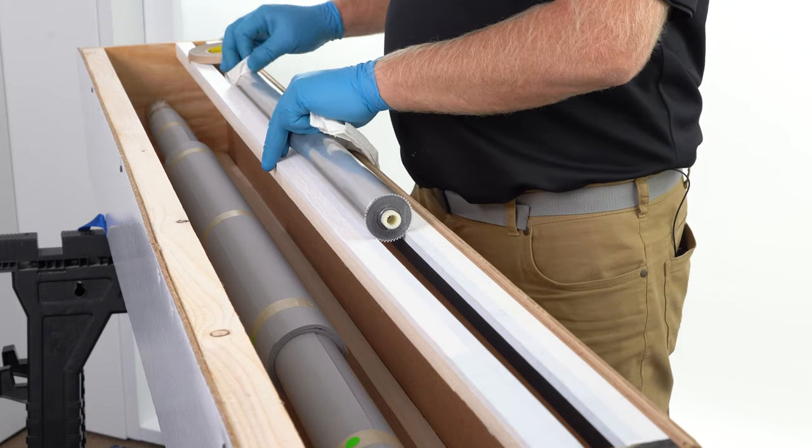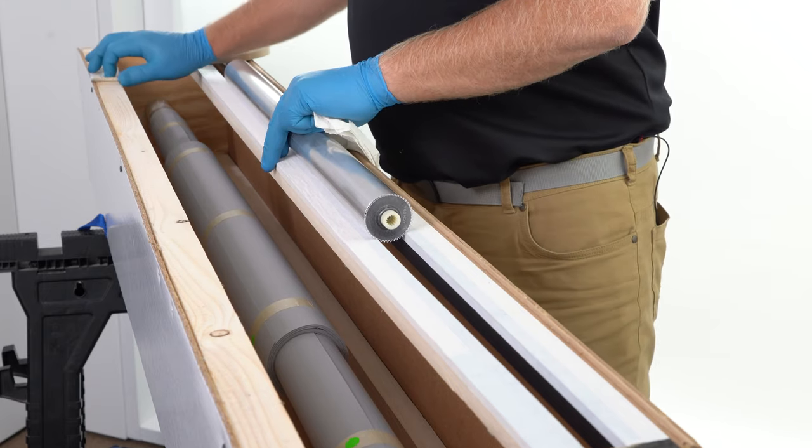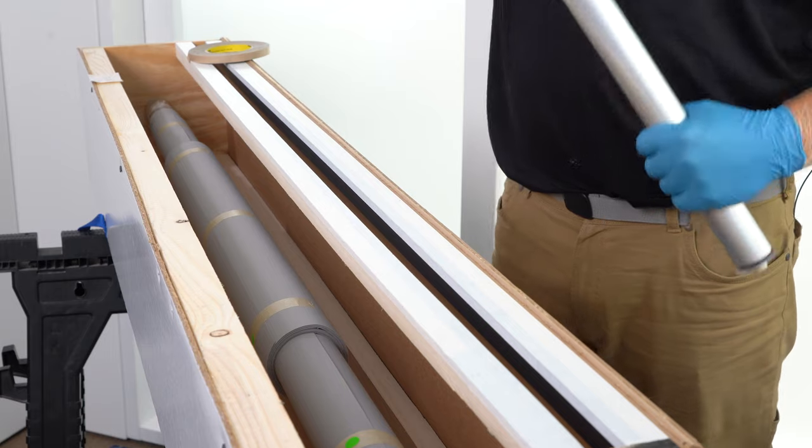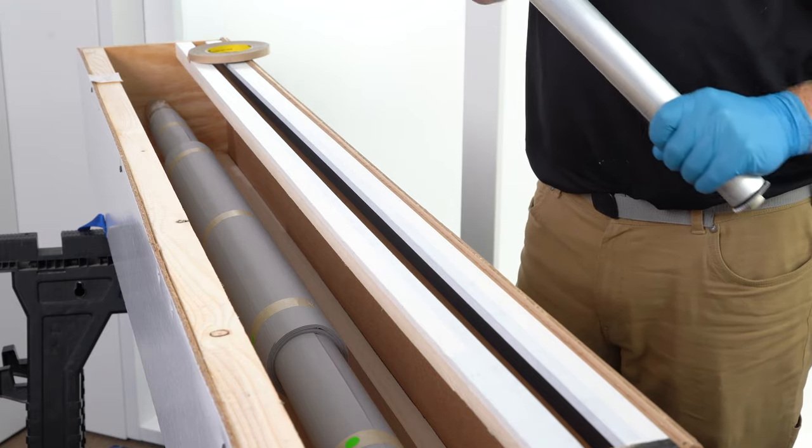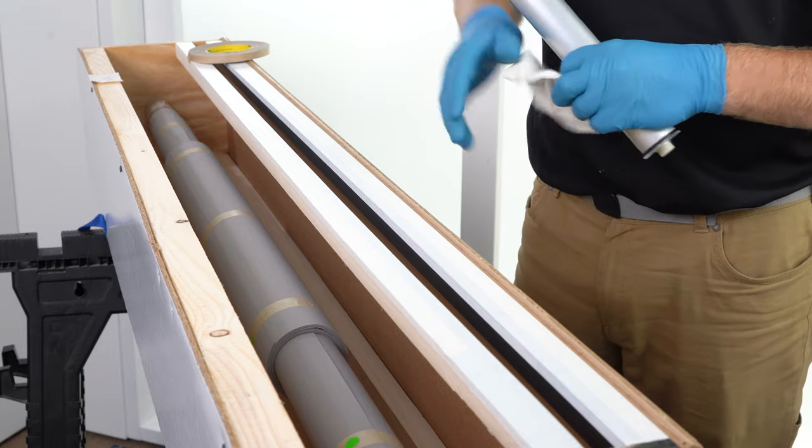Go ahead and remove your label. Give the tube a quick wipe down. A little bit of alcohol would probably be best just to get a nice clean edge for that tape to stick to.